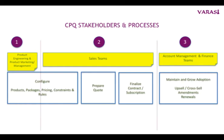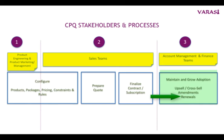Other capabilities that account management teams would look for from the CPQ system include amendments to contracts — that is, when a customer wants to add a new product or change a product from the ones that were quoted or sold. This covers workflows for upgrades, add-ons, or downgrades. When subscriptions reach their contract end date, CPQ may be utilized to create the renewal opportunities and renewal quotes.